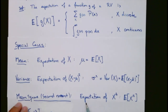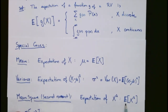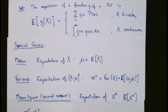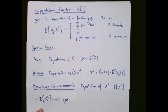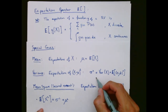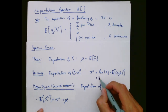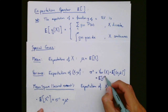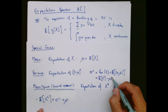The mean and the variance are also linked to another entity called the mean square, or the second moment. This is the expectation of x², denoted E[x²]. It is easy to show that the mean square is linked to the variance and the mean: E[x²] equals the variance plus the squared mean. This gives us a second way to compute the variance: the variance equals the mean square minus the squared mean.